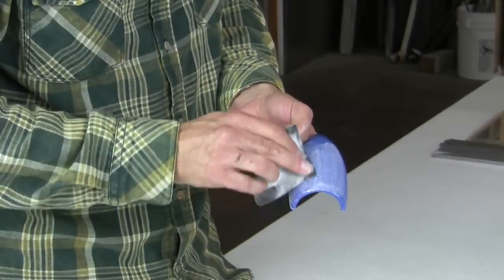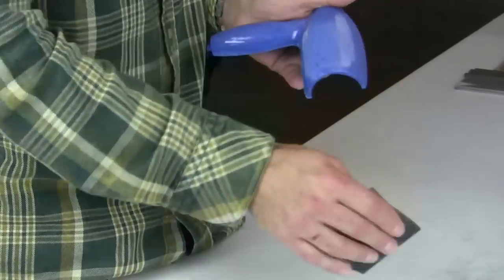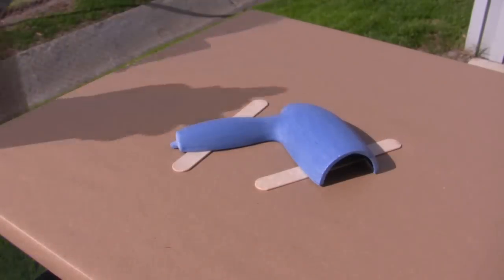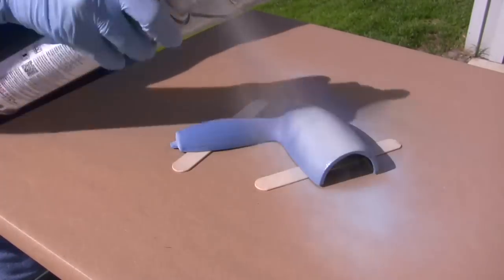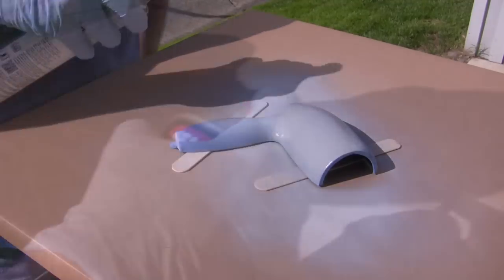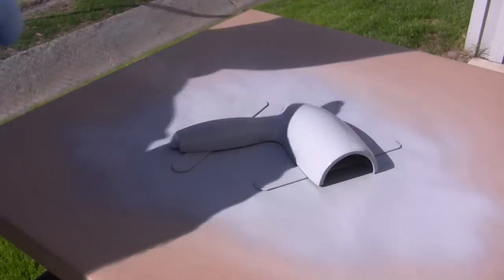After the epoxy is cured, we start to sand the surfaces smooth. Once smooth, we use a high filling primer to find and fill any low spots on the pattern. A few coats are applied and allowed to dry.